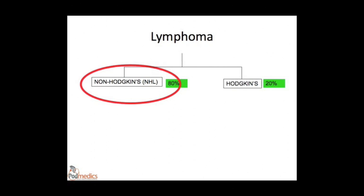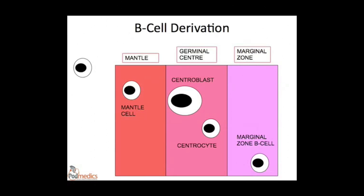Starting with non-Hodgkin lymphoma, which has quite a complicated subclassification — the easiest way to think about it is by considering normal B lymphocyte development. A naive B cell from the bone marrow may encounter an antigen, at which point it migrates to the lymphoid follicle. The lymphoid follicles are composed of three layers: the marginal zone, the mantle zone, and the germinal centre. It then moves into the mantle zone, becoming a mantle cell, then into the germinal centre, where it becomes a large centroblast, then a more quiescent centrocyte. Following this, it forms a marginal zone B cell, and lastly a plasma cell.